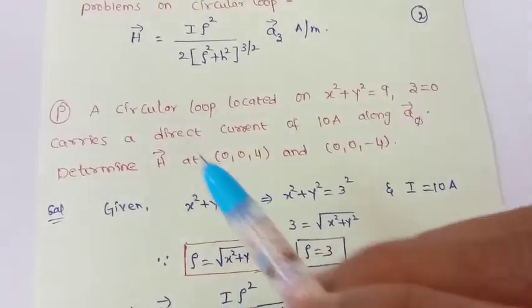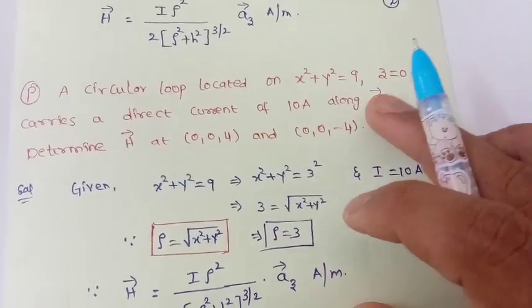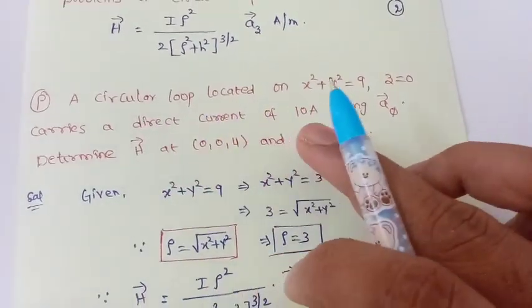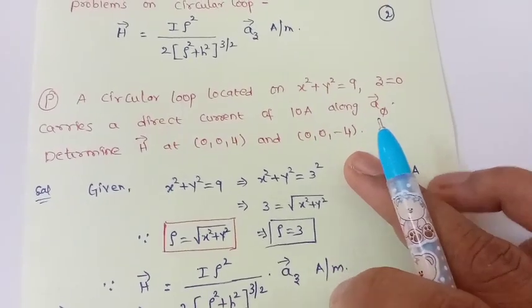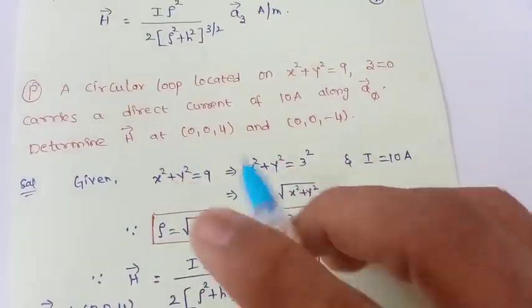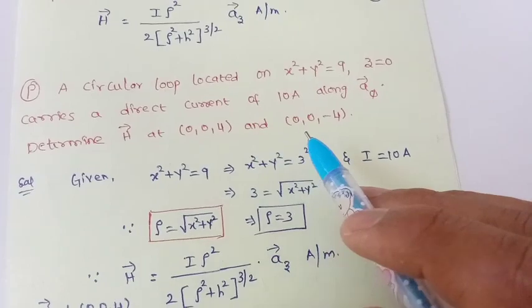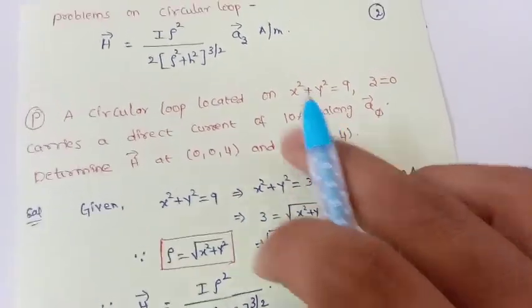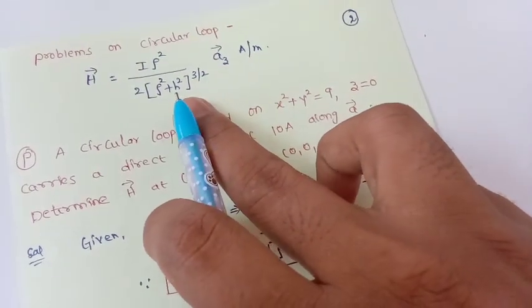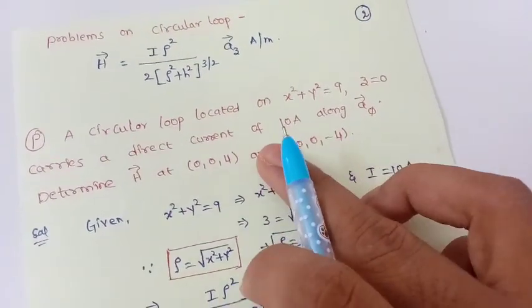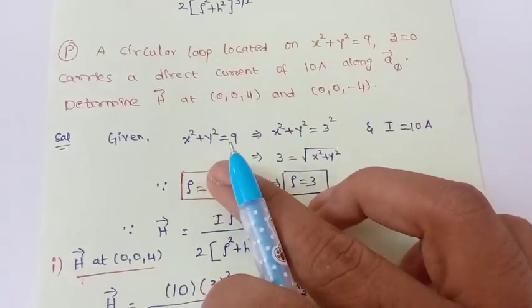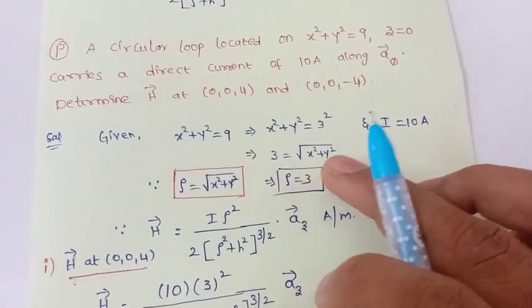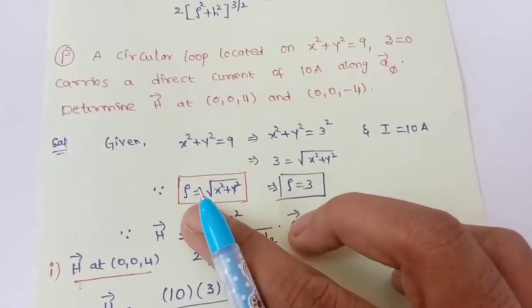The problem: a circular loop located on x² + y² = 9, z = 0 plane carries a DC current of 10 amperes along the φ-direction. We have to determine the magnetic field intensity at a given point and also at its negative counterpart. Observe that for both situations the formula is the same, because h² and (−h)² give the same result.